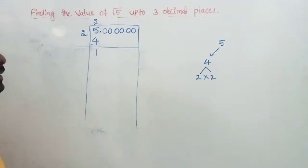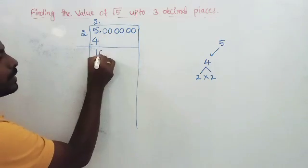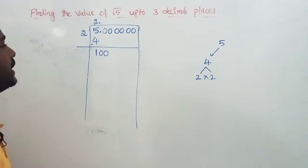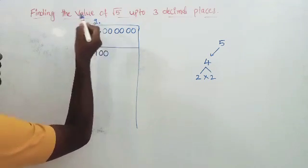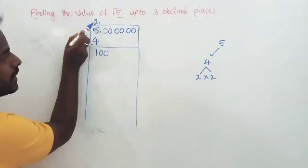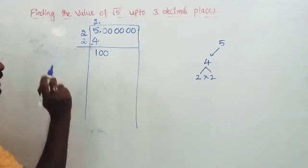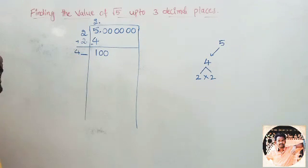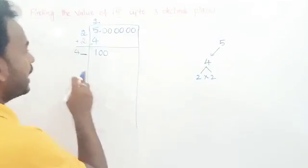Since we have a decimal part in the dividend, we place a decimal point after the digit 2 in the quotient. Next, we bring down two zeros at a time, giving us 100. Then we add the last digit of the quotient (which is 2) to the divisor (also 2), getting 2 plus 2 equals 4. We leave one digit place as a blank — so the new divisor is '4 dash'.